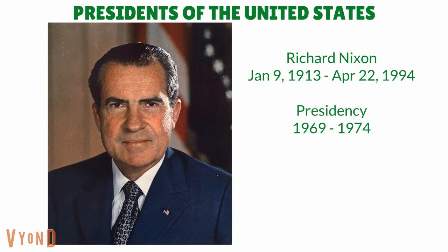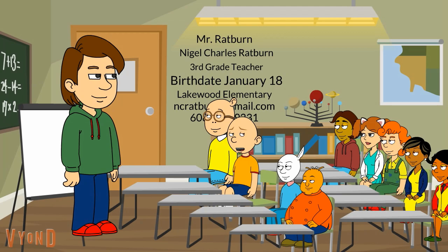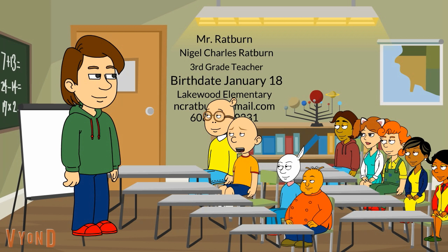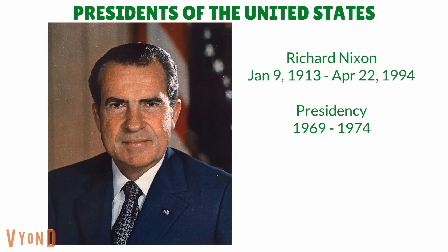Richard Nixon was our thirty-seventh president of the United States. He was born on January 9th, 1913. He was a president from 1969 to 1974. He got re-elected in 1972 and his second term began in 1973. Did he die in office this time? No, Caillou, not this time. But his presidency ended in 1974. Why did his presidency end in 1974? On August 8th, 1974, Nixon decided to resign. He gave out his farewell speech to everyone, and then the next day, on August 9th, 1974, he resigned. He was the only president to resign. He later died on April 22nd, 1994.